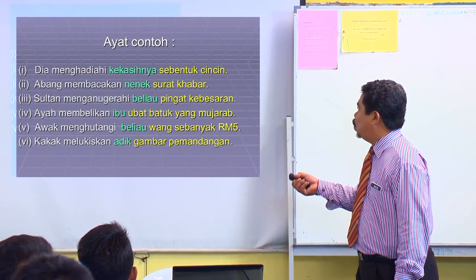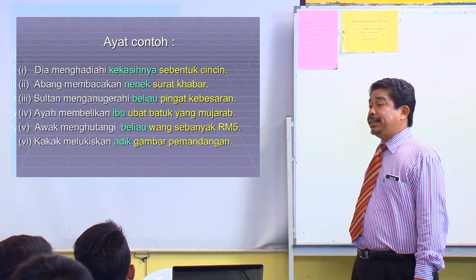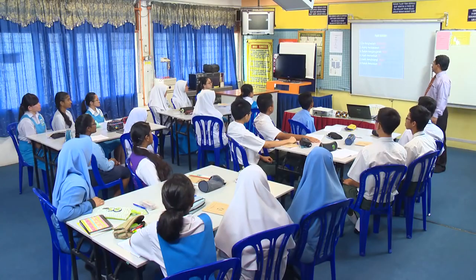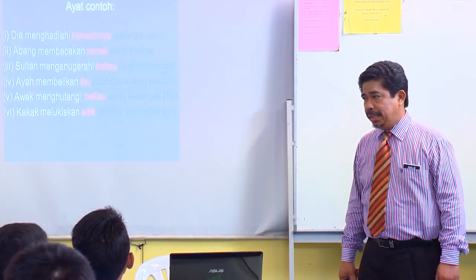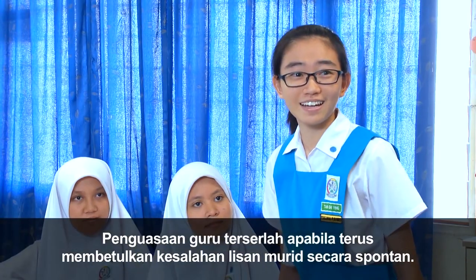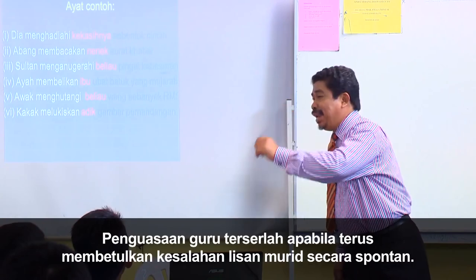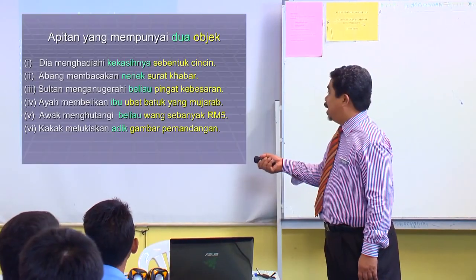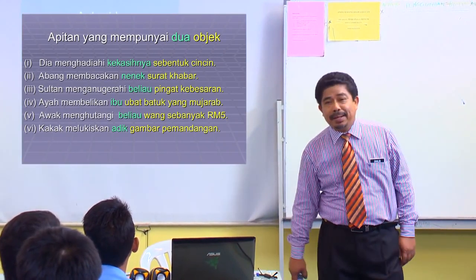Ayah membelikan ibu ubat batuk yang mujarab - objek pertama ibu, objek kedua ubat batuk yang mujarab. Awak menghutangi beliau wang sebanyak RM5 Malaysia - objek pertama beliau, objek kedua wang sebanyak RM5. Kakak melukiskan adik gambar pemandangan - objek pertama adik, objek kedua gambar pemandangan. Bagus, Hassanah, Tan Sheen dan Sharmila.